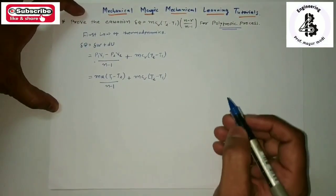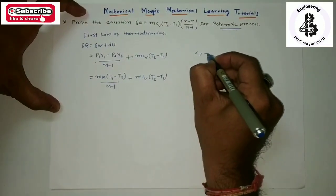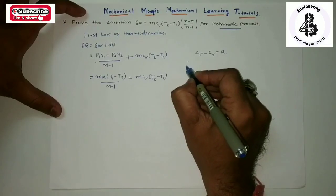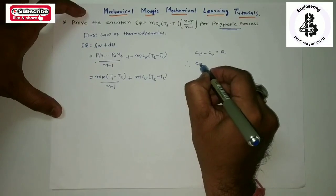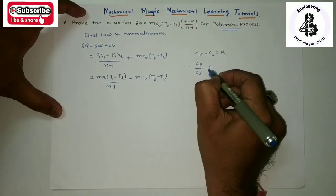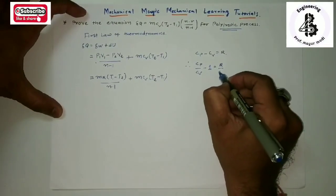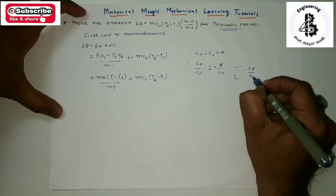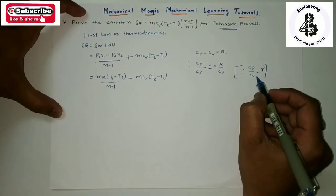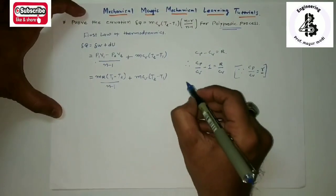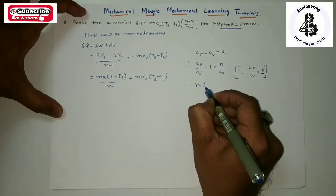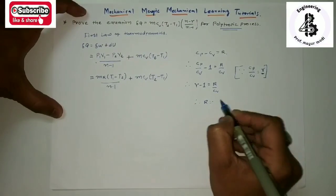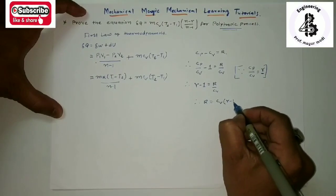Now we have the relation Cp minus Cv equals R. Dividing by Cv from both ends gives Cp/Cv minus 1 equals R/Cv. We know Cp/Cv equals gamma, so gamma minus 1 equals R/Cv, and therefore R equals Cv(gamma minus 1).